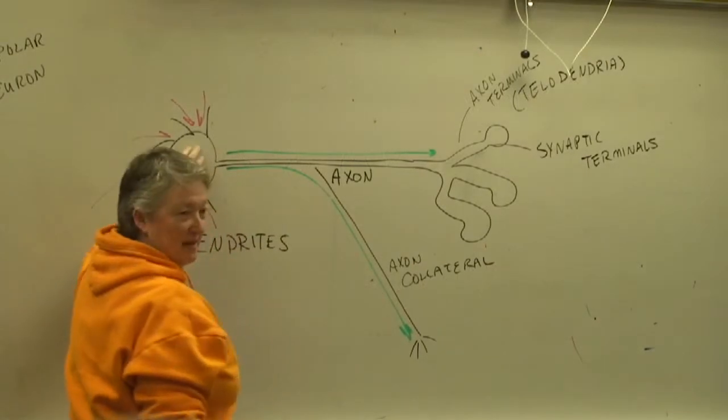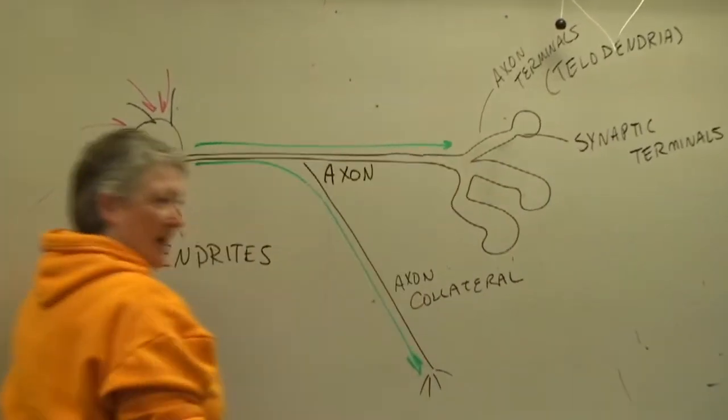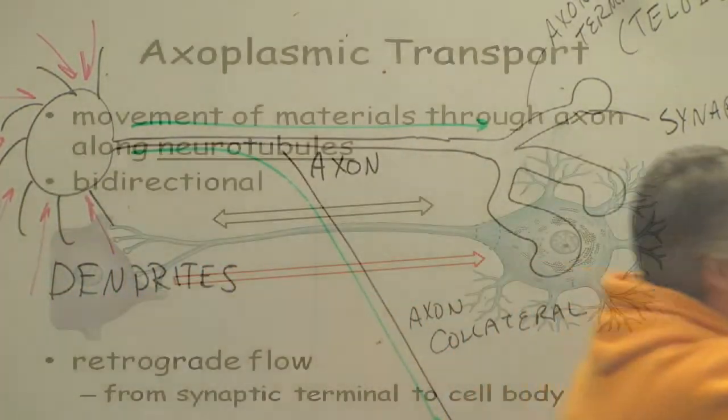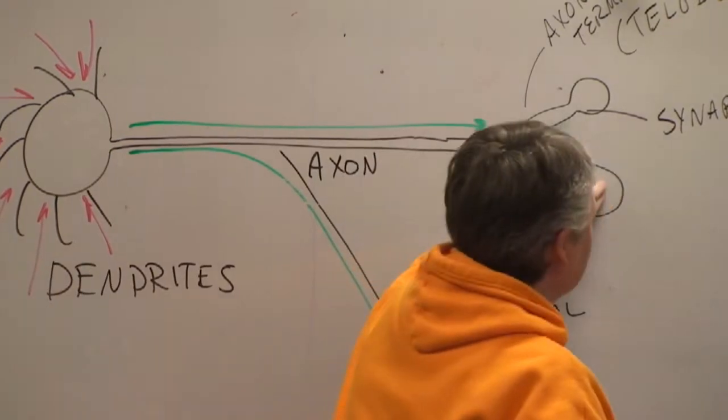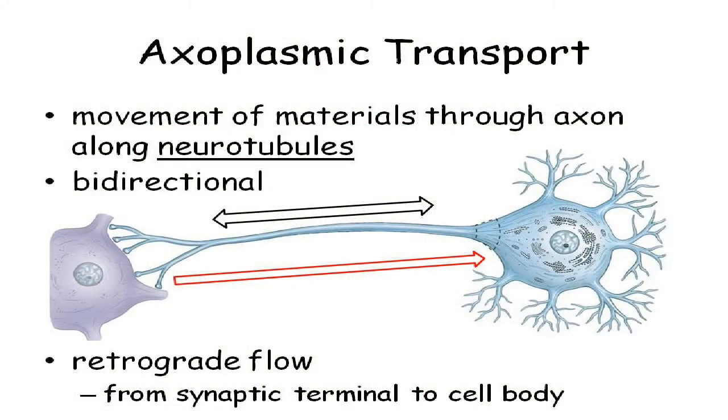But notice there is cytoplasm in here, right? And the cytoplasm is going down the axon into the synaptic terminals and back, right? And so the movement of this cytoplasm, particularly through the axon, is called axoplasmic transport. So there are materials moving back and forth between the soma and the synaptic terminals. Back and forth, back and forth. It's bidirectional flow. And so you have what are called neurotubules. Those are just the microtubules inside the neuron. Remember in the cytoskeleton we had the microtubules, the microfilaments, and the intermediate filaments? So the neurotubules are just the microtubules in the neuron.